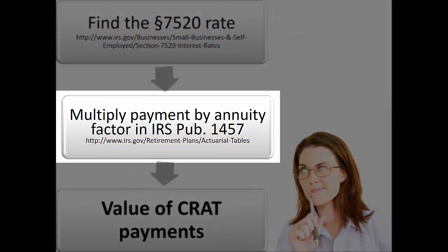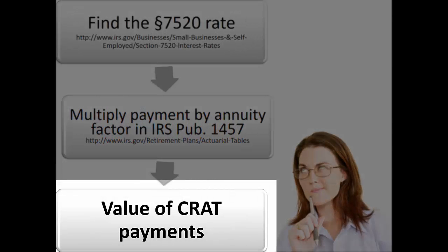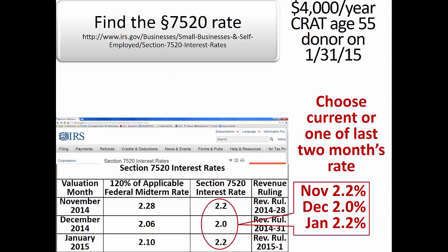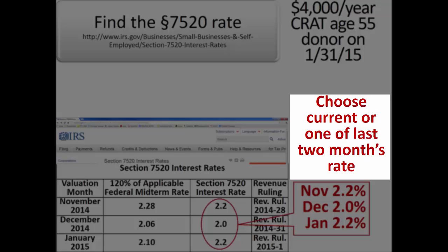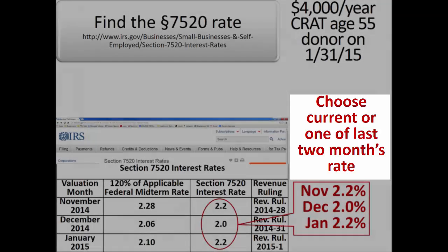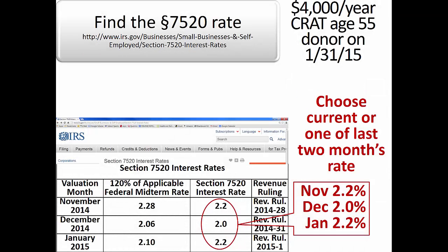Multiplying the annuity factor times the payment, with a possible adjustment from Table K for payments starting earlier than or given more frequently than 12 months, gives the valuation of the annuity for purposes of the charitable income tax deduction. As with charitable gift annuities, the donor is allowed to choose the current Section 7520 rate or either of the previous two months for the annuity calculation. Additionally, because the next month's rate is released toward the end of the previous month, the donor may have a choice among four different rates if the transaction can be briefly postponed.